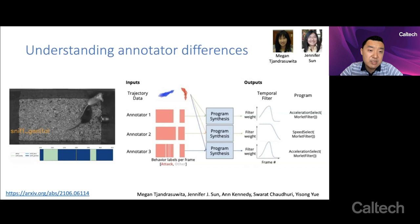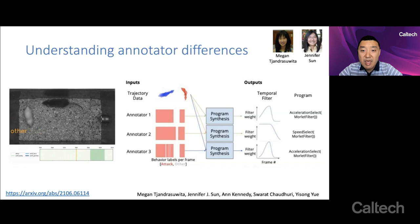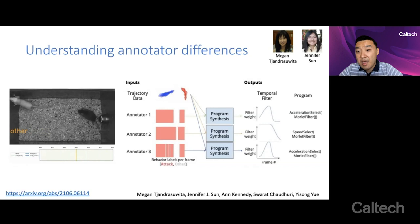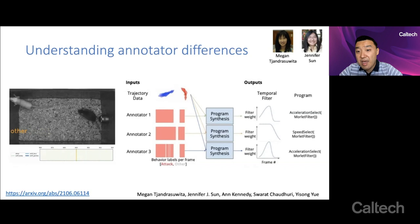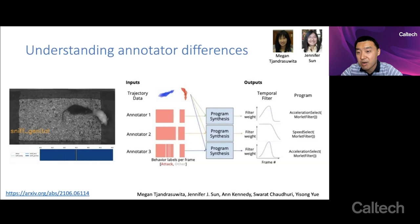So motivated by this idea we thought we could actually try to use neurosymbolic models to explain annotator differences. So in this case for this particular study you have one video that multiple annotators annotated according to their internal definitions of these behaviors. And then we use program synthesis or neurosymbolic learning to design simple interpretable programs that can explain the differences between these annotators.